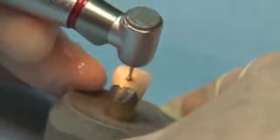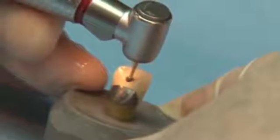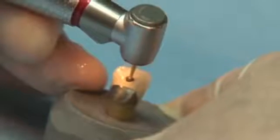Look at how smoothly and efficiently the Great White number 6 round burr goes through both the porcelain and metal of this failed crown.